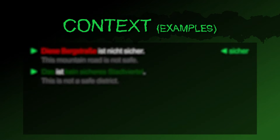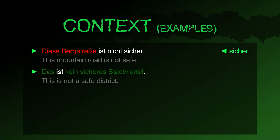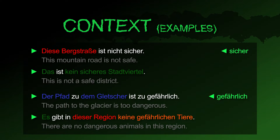Kontext. Diese Bergstraße ist nicht sicher. Das ist kein sicheres Stadtviertel. Der Pfad zu dem Gletscher ist zu gefährlich. Es gibt in dieser Region keine gefährlichen Tiere.